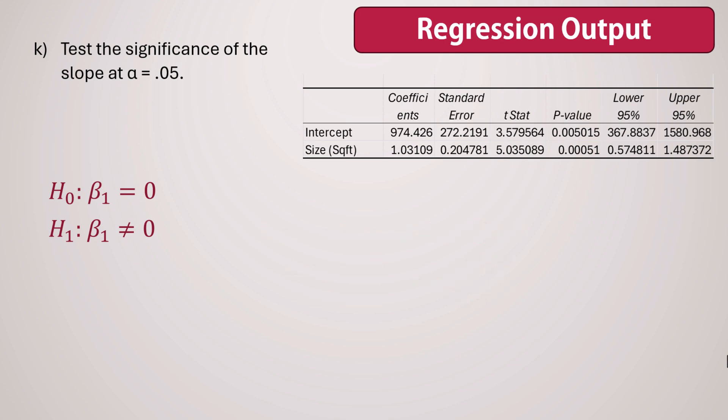Looking at our regression output, we find the t-statistic for testing the relationship is 5.035, which is the slope coefficient divided by the standard error of the slope. The corresponding p-value is 0.00051, which is substantially smaller than our significance level of 0.05, suggesting we should reject the null hypothesis. Based on this evidence, we can conclude that the slope is indeed not equal to 0.